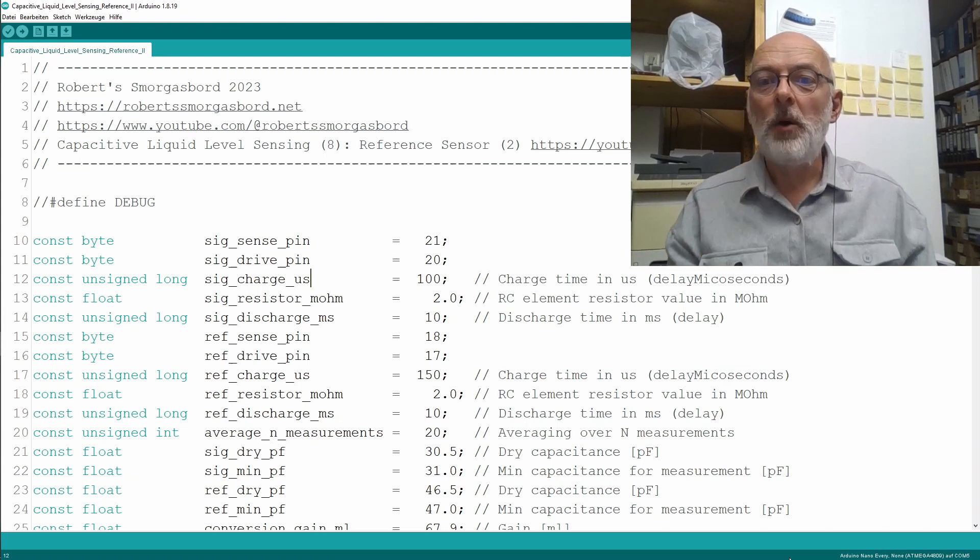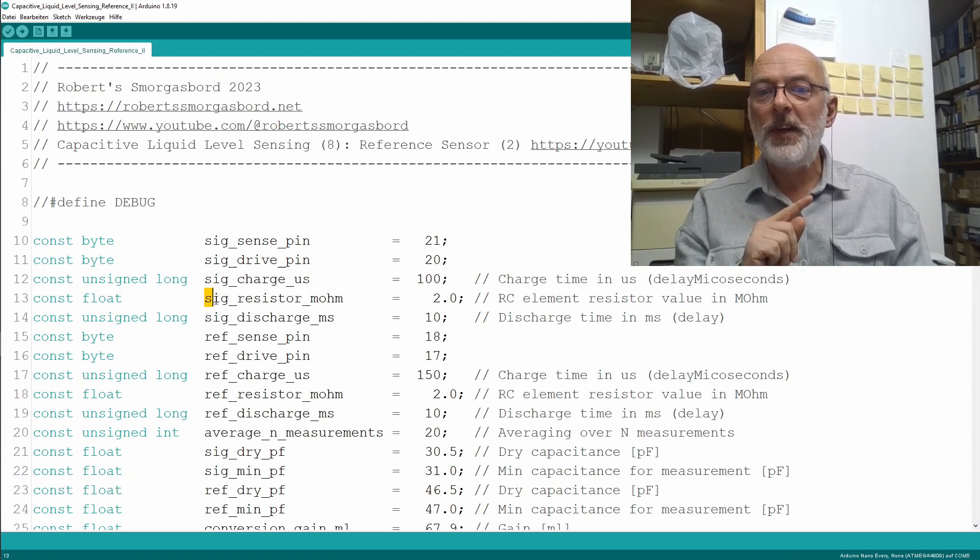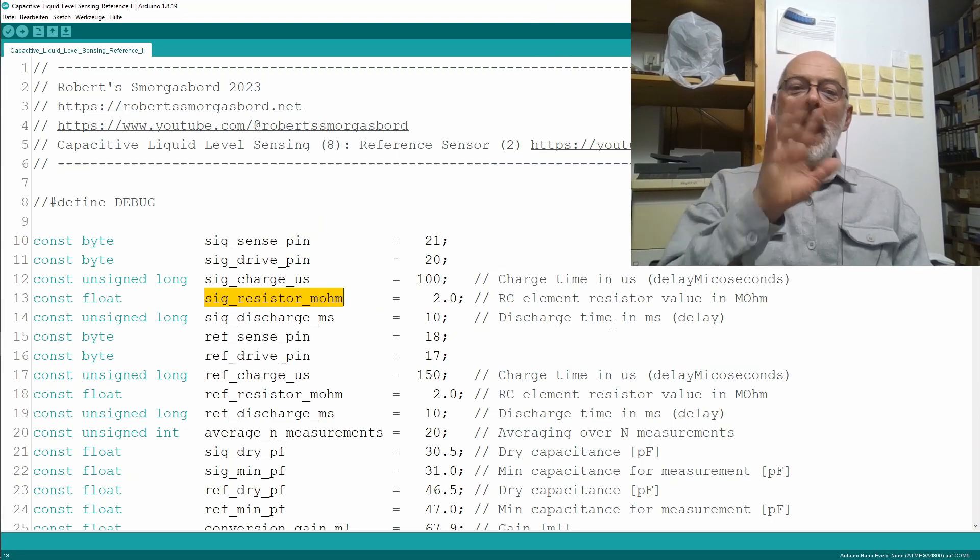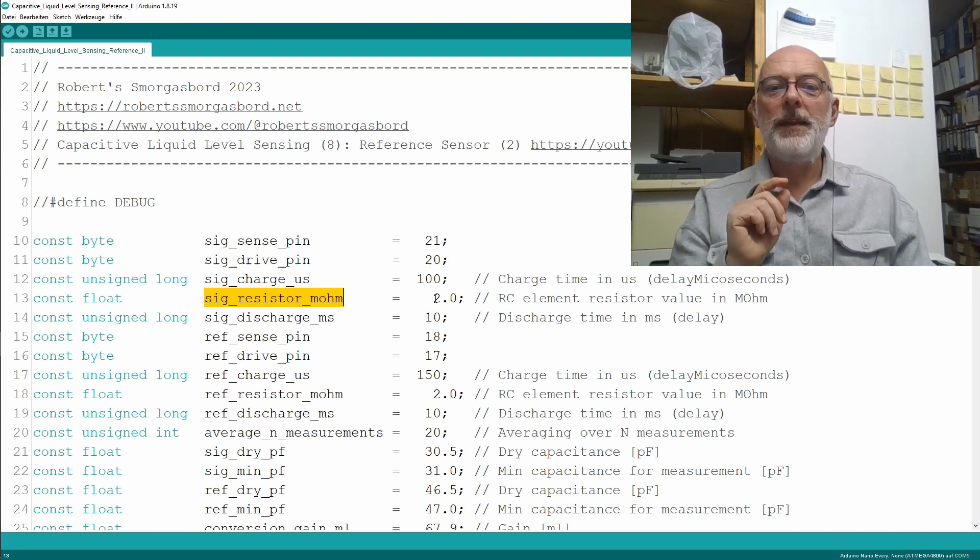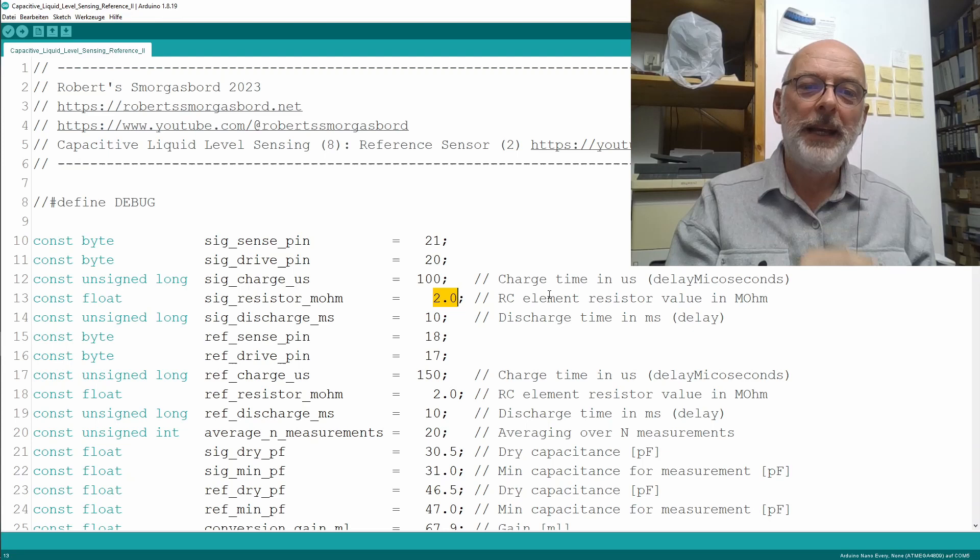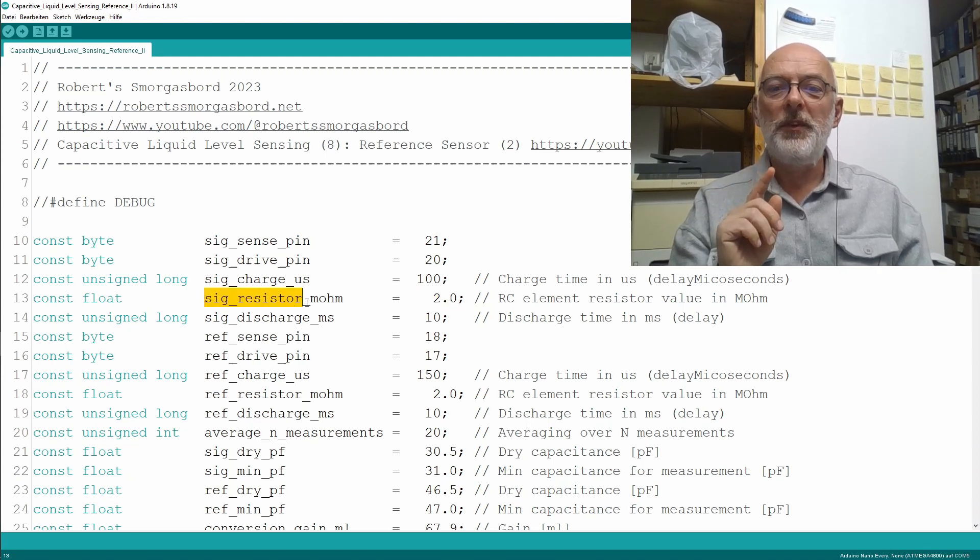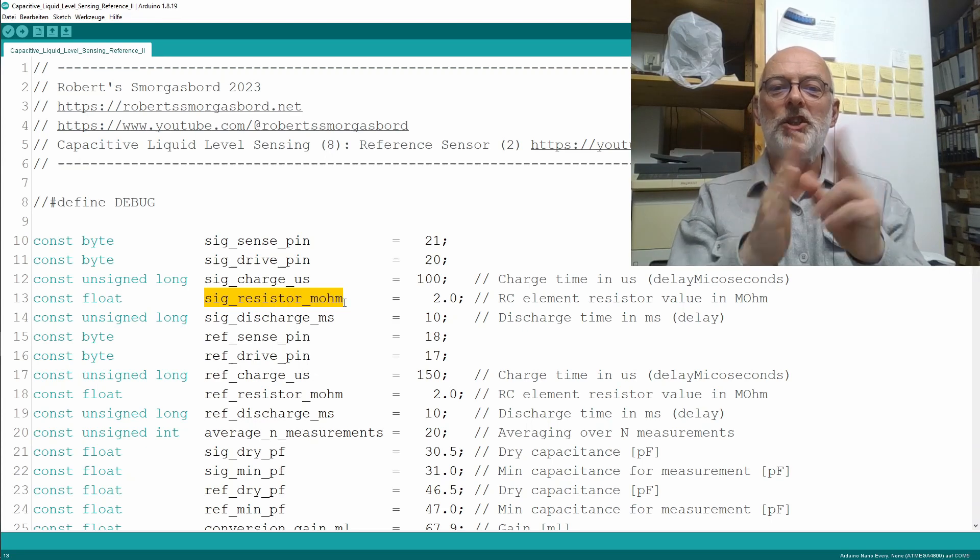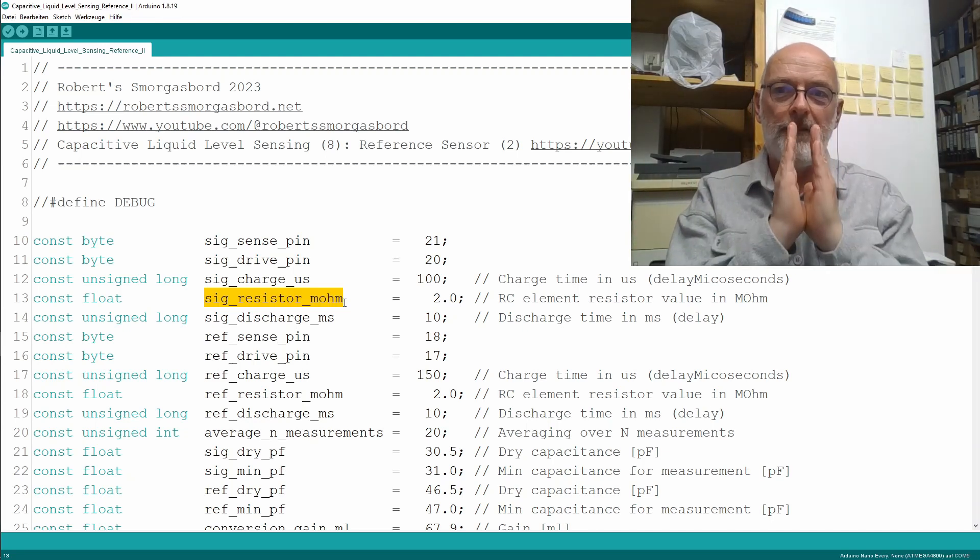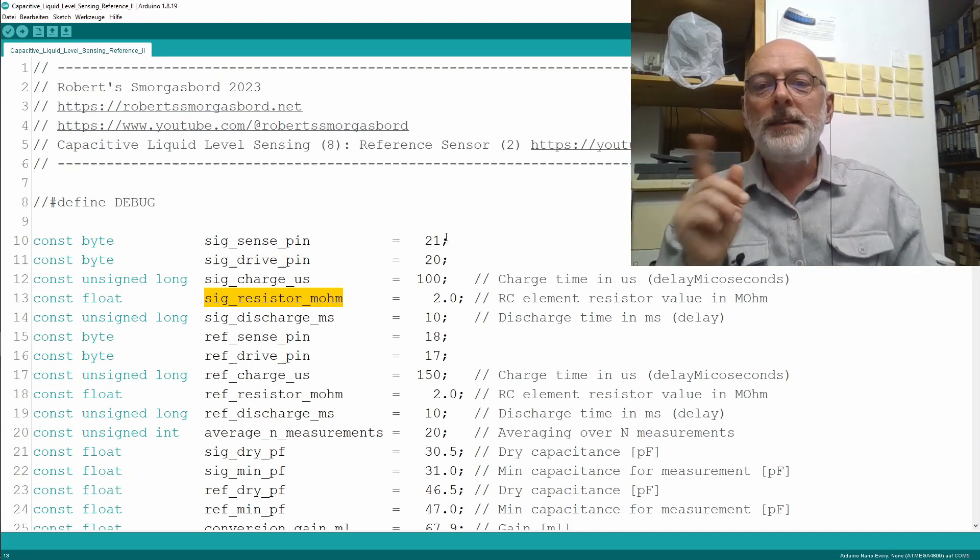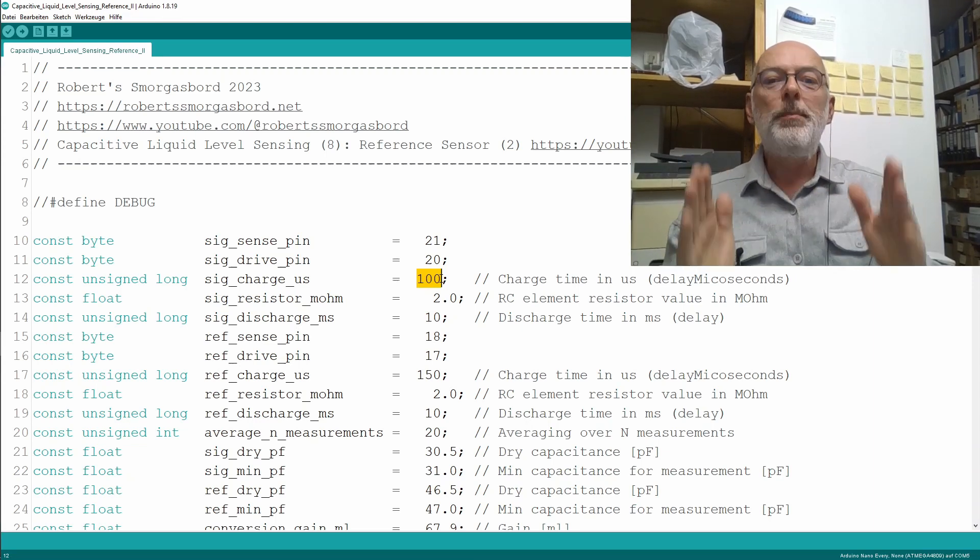Third, I wanted to talk about how I optimized for precision the charge time values and the resistor values. Unfortunately, it's fiddling and compromises. We already talked about that lowering the resistor value of our RC element is good for reducing noise. However, if you lower the resistor value, you also have to lower the charge time. Otherwise, our little capacitance is completely charged up after only a very small time. And you want to keep the charge time in microseconds reasonably large.